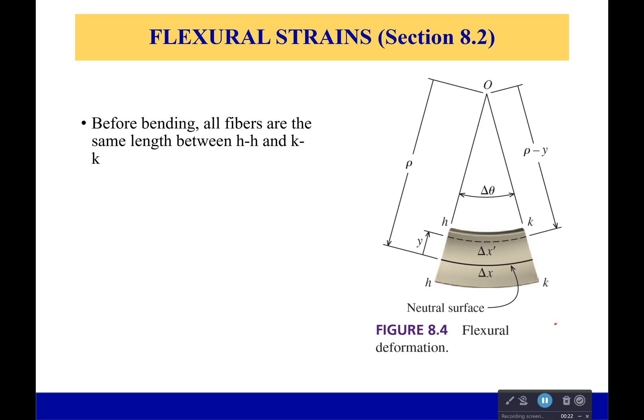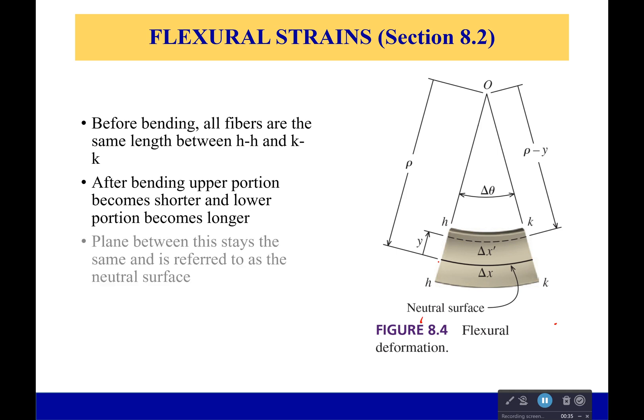Before bending, all the fibers are the same length between HH and KK—the little section I've cut out here. However, after bending, the upper portion becomes shorter and the bottom portion becomes longer. Now the plane between this, even though it bends, is still the same length, and that is referred to as the neutral surface at the point where we have no change, no strain, which is going to be important.